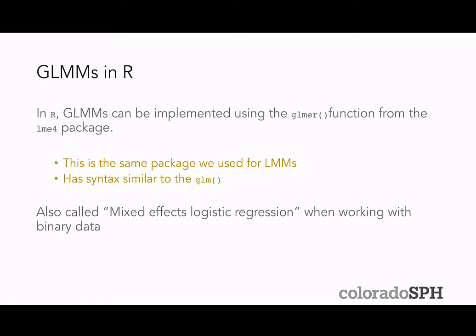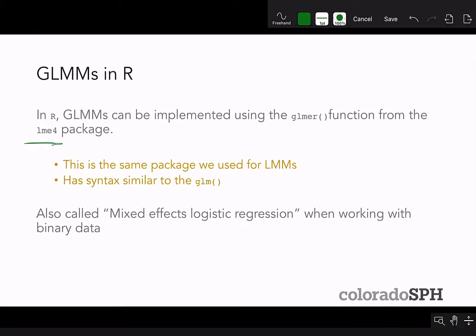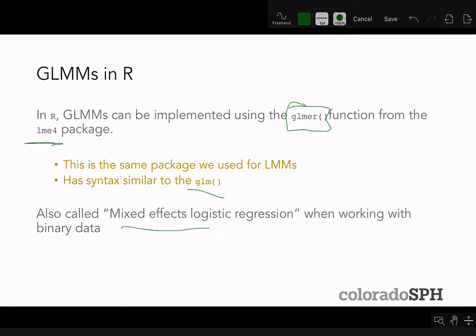In R, GLMMs, like LMMs, can be implemented in the LME4 package. They're implemented using the GLMER function. It has similar syntax to the GLM function in base R, and when you're working with binary data you can also call this mixed effects logistic regression.